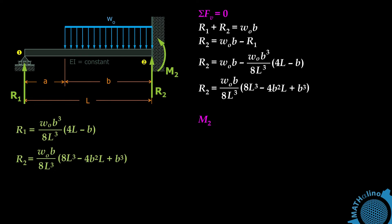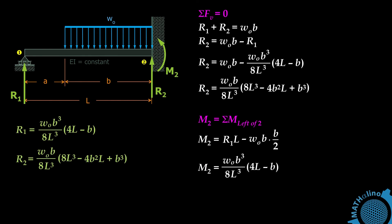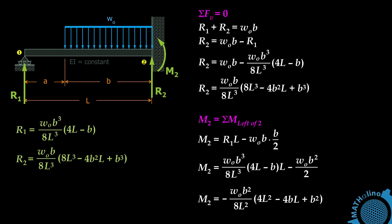The moment at 2 equals the sum of all moments to the left of 2. M2 equals R1 times L minus WOB times its moment arm B over 2. Substituting R1 times L minus WO times B squared over 2, and factoring negative WO times B squared over 8L squared, we obtain the value of M2.